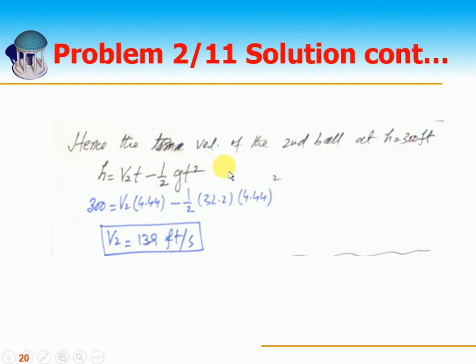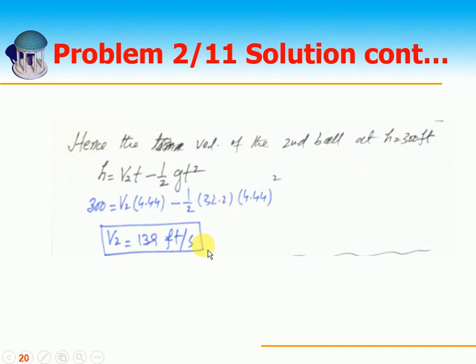The velocity of the second ball at altitude H is given by H equals V2·T minus half·G·T². Substituting 300 equals V2 times 4.44 minus half times 32.2 times 4.44², we get V2 equals 139 feet per second. At the instant of collision, ball 1 is descending and ball 2 is ascending.